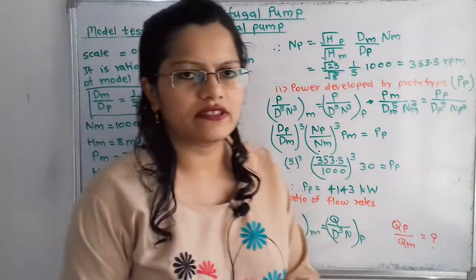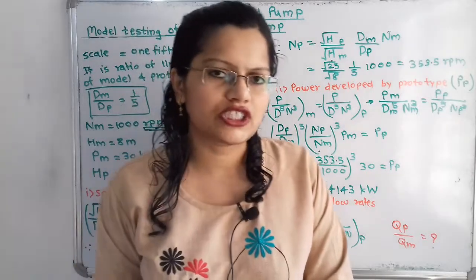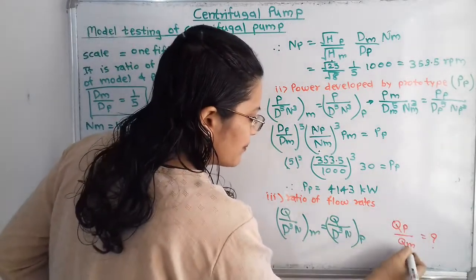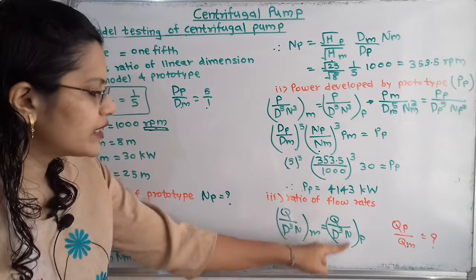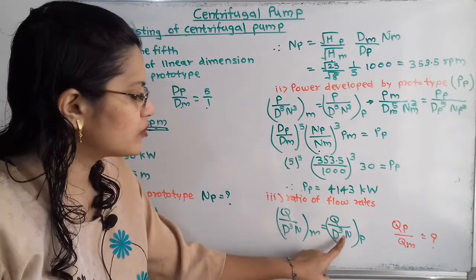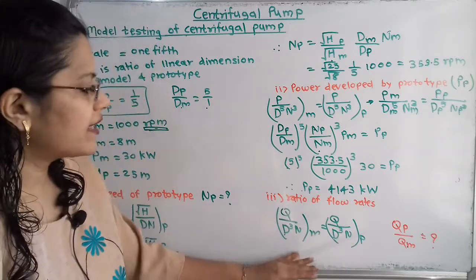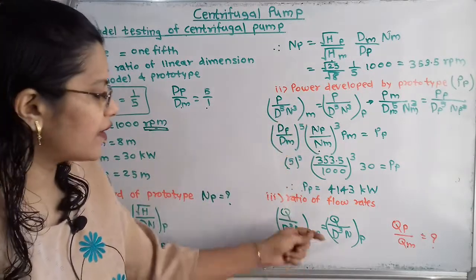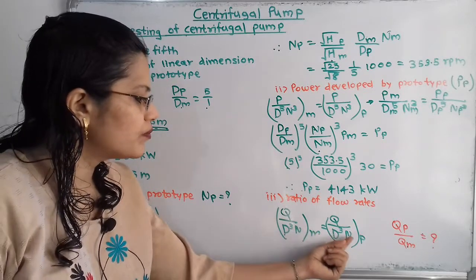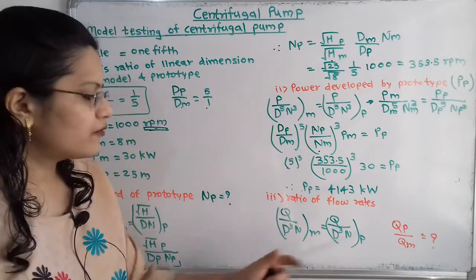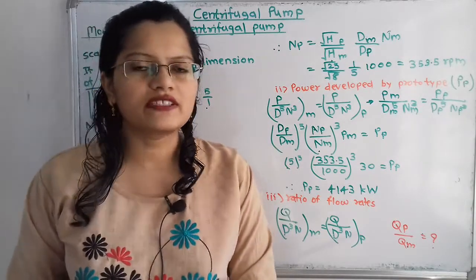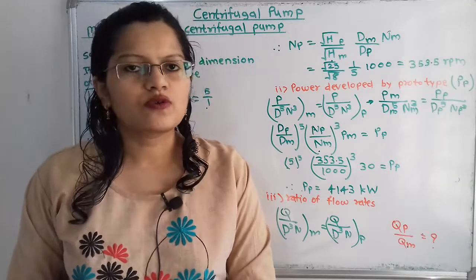The next question is the ratio of flow rates, which means finding Q_p / Q_m. The formula is: Q / (D³ · N) of model = Q / (D³ · N) of prototype. Rearranging gives Q_p / Q_m = (D_p / D_m)³ × (N_p / N_m). Please find this answer and comment in the comment box. You can also find the answer in the description box to cross-verify.